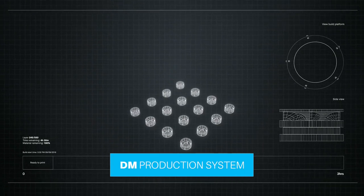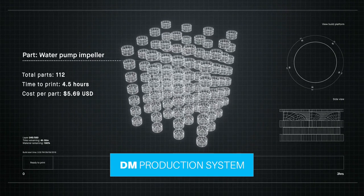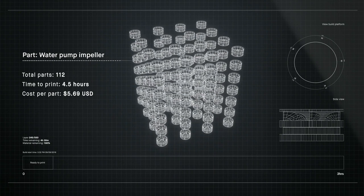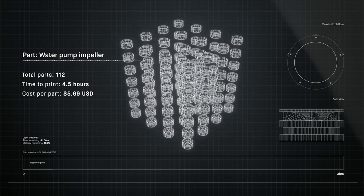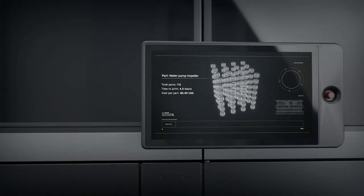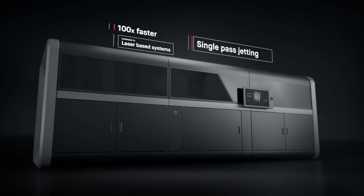Metal 3D printing could change much of the world around us if it was fast enough and cheap enough for mass production. Introducing the production system, powered by single-pass jetting. At up to 100 times faster than laser-based systems, it's the first metal 3D printing solution for mass production.